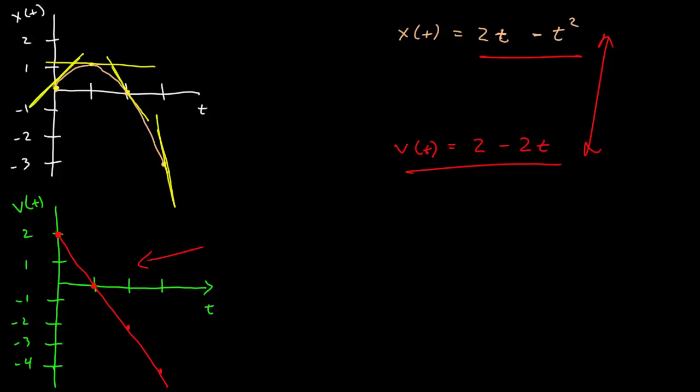This is telling me that the slope of the tangent line is positive at t equals 0, which is consistent with what I know. And it's 0 at t equals 1. And so, it's a negative 2 slope at t equals 2.